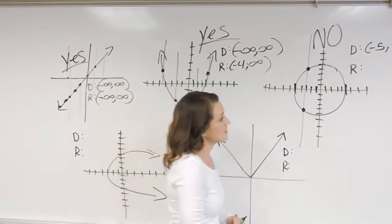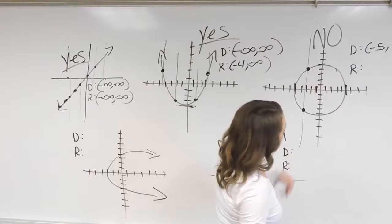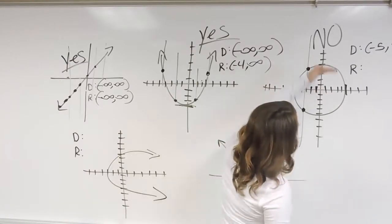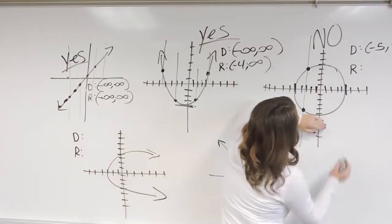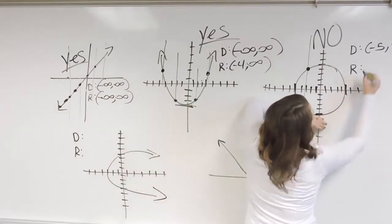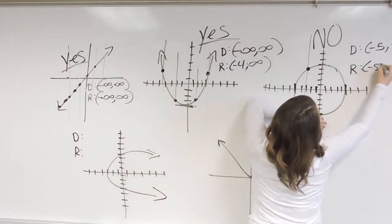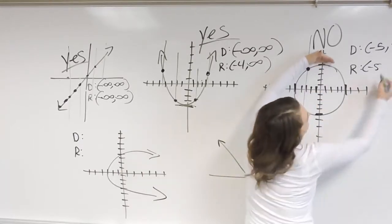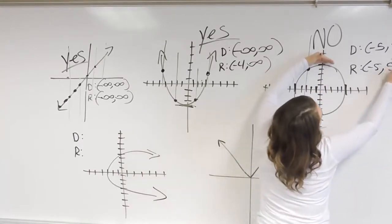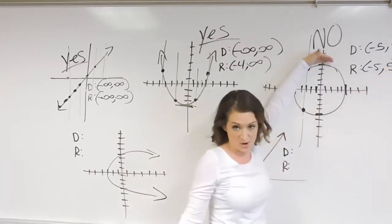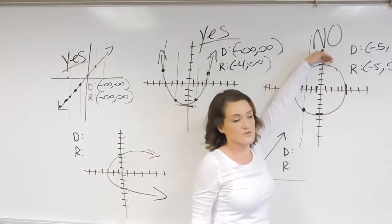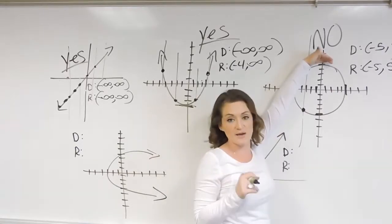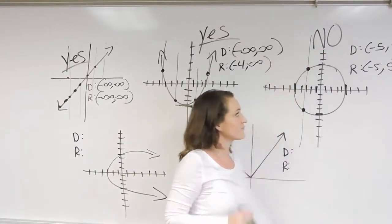That's the domain. For the range, now we're looking up and down. This graph hits at a negative five and goes all the way up to positive five. So the range is also negative five to five for this one.